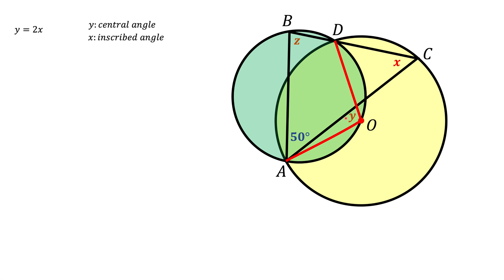I have a video where I go into a lot of detail about inscribed and central angles — there's a link in the description. The next thing to notice is that ABDO is a quadrilateral inscribed into the green circle. There is a theorem for inscribed quadrilaterals that says a quadrilateral is inscribed if and only if the sum of opposite angles is 180 degrees. So in our case, angle Y plus Z equals 180 degrees. There is also a link to the video where I describe inscribed quadrilaterals in more detail.